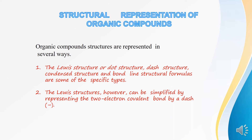Now, the next heading: structural representation of organic molecules. In earlier classes, you have already studied how to write the electron dot structure of covalent compounds — the dot structure where we show the different electrons present in the outermost shell of atoms bonded together by sharing of electrons, showing all those electrons in a particular octet or duplet. All those dot structures are called electron dot structures or Lewis structures.